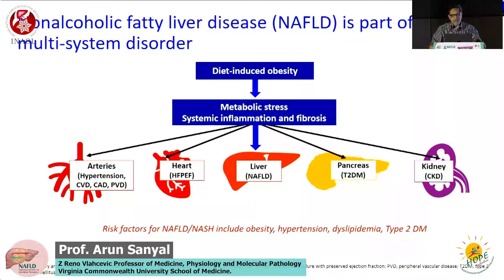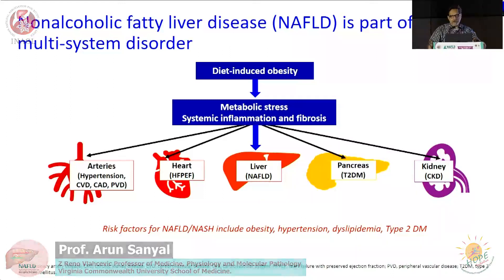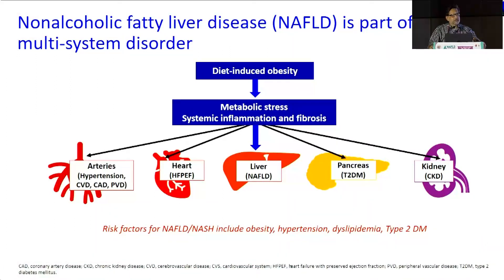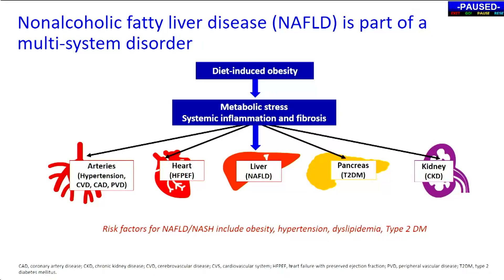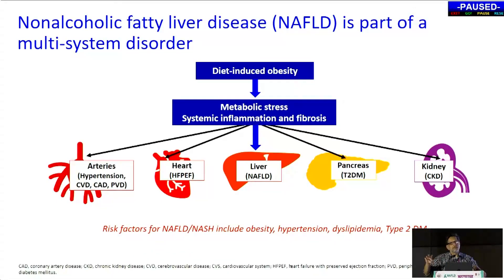Many of you may have seen this slide in previous talks. Historically, we recognized that patients with obesity, hypertension, diabetes, et cetera, were risk factors for fatty liver disease. But what it really is is a comorbidity — these are comorbidities that are commonly present in the same patient. What connects all of these different end-organ diseases together is a state of metabolic stress that leads to systemic inflammation and fibrosis, which has different manifestations in different organs.